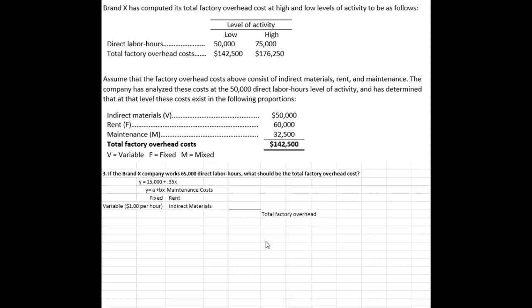The last part of the problem is actually very simple if we've gone through the first two requirements and done those successfully. What they're asking us is to project what the total factory overhead costs are for Brand X Company if they work 65,000 direct labor hours.